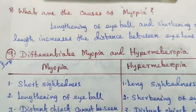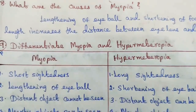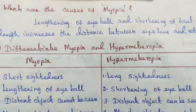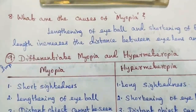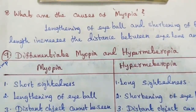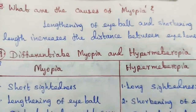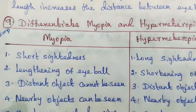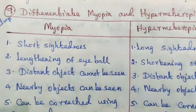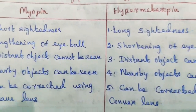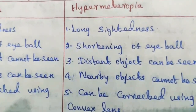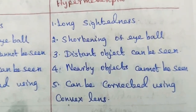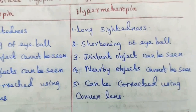Question number eight: what are the causes of myopia? Lengthening of the eyeball and shortening of focal length increases the distance between the eyelids and retina. Question number nine, important detailed question: differentiate myopia and hypermetropia. Myopia — short-sightedness: lengthening of eyeball, distant objects cannot be seen, nearby objects can be seen, corrected using concave lens. Hypermetropia — long-sightedness: shortening of eyeball, distant objects can be seen, nearby objects cannot be seen, corrected using convex lens.